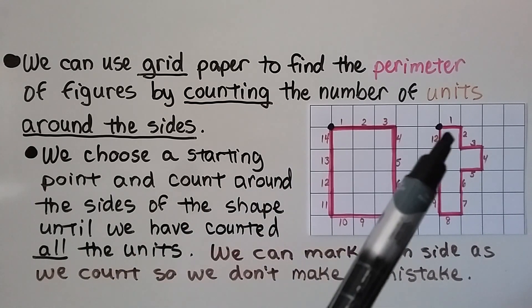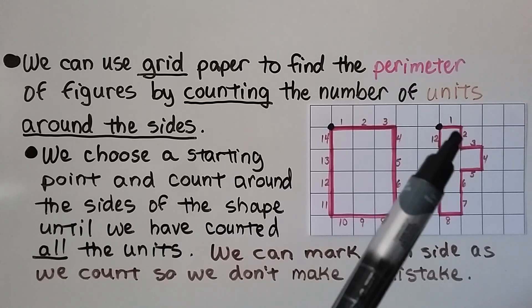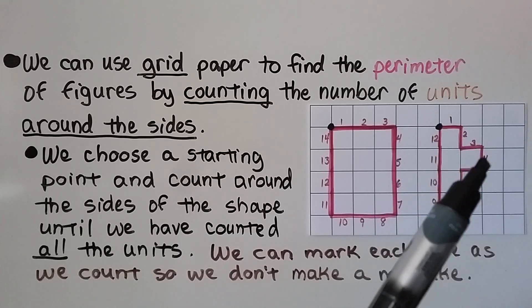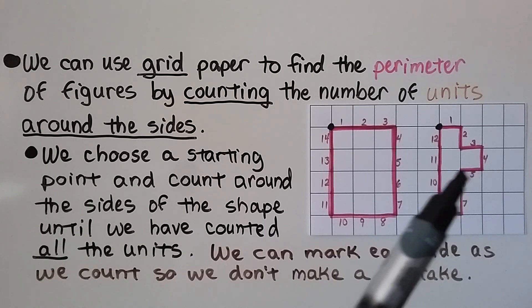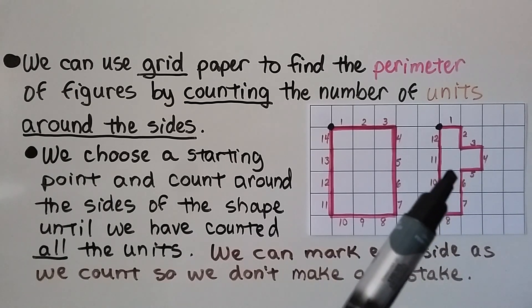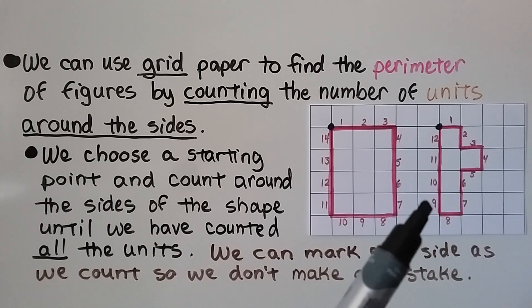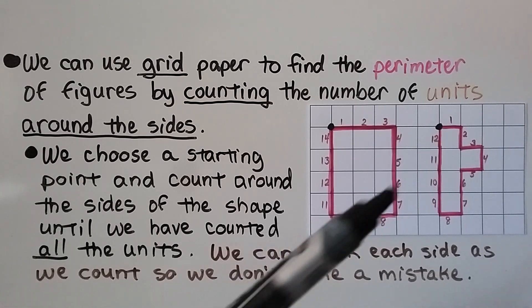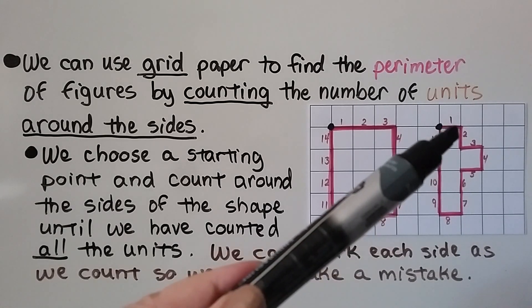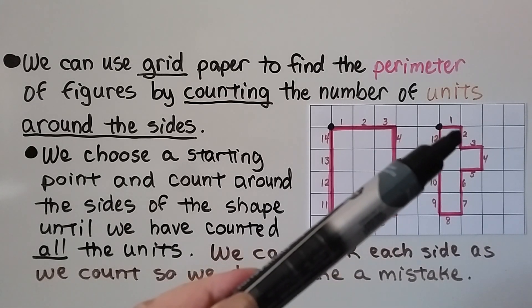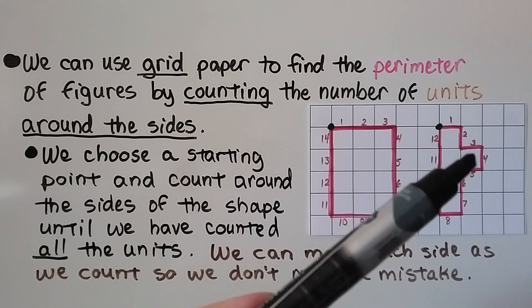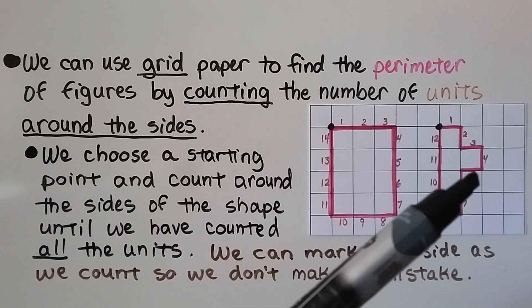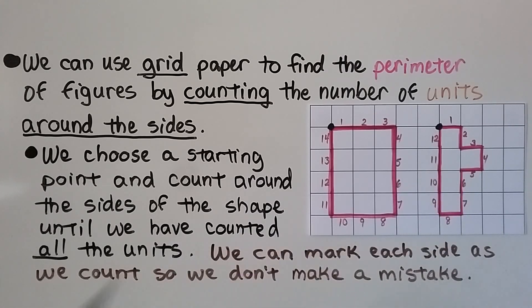We can do it for this one too: 1, 2, and then 3, 4, 5, 6, 7, 8, 9, 10, 11, 12. Notice when we went down here, we counted this side as 2 and this side as 3, and we counted this side as 5 and this side as 6.